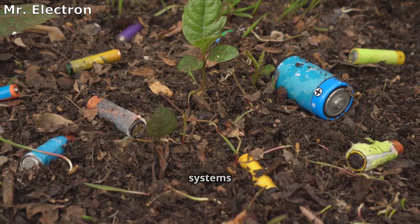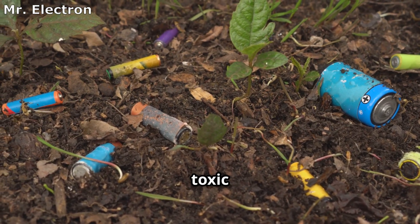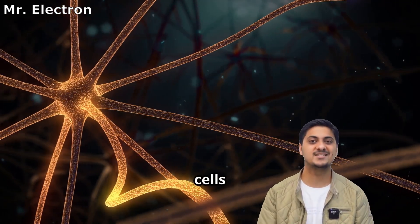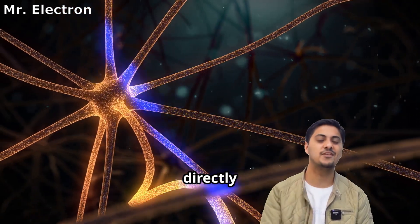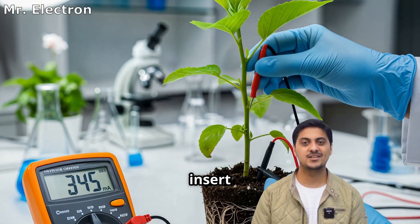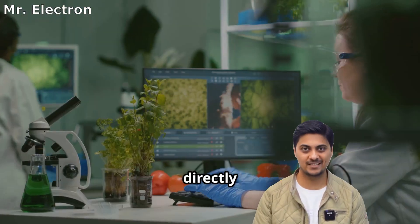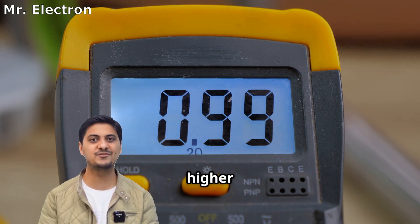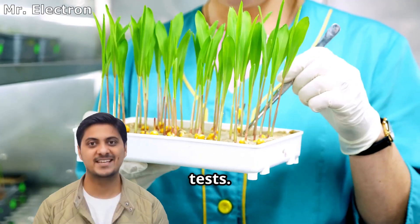Unlike chemical batteries, these systems produce zero toxic waste over their lifetime. Biosolar cells extract electricity directly from living plant tissue using special electrodes. Researchers insert iron and platinum wires directly into photosynthetic leaf tissue. This method produces higher voltage than soil-based systems in laboratory tests.